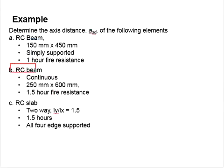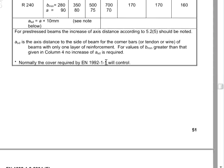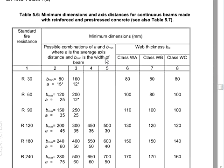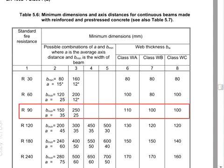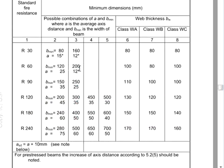The second question is a continuous beam with one and a half hour fire resistance. You will refer to Table 5.6 for a continuous beam. The fire rating is one and a half hours, which means it's 90 minutes. The beam width is 250, so your axis distance A will be 25, plus 10 mm, giving a total of 35 mm.